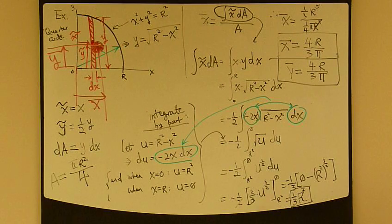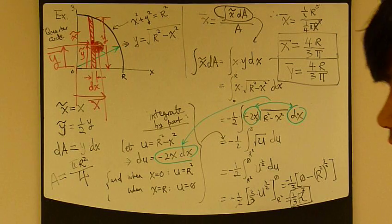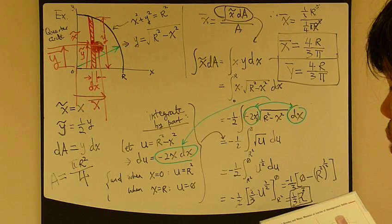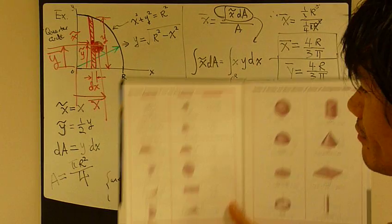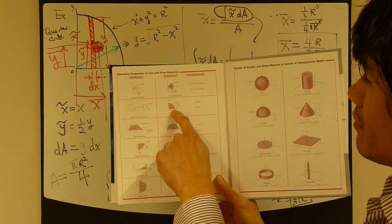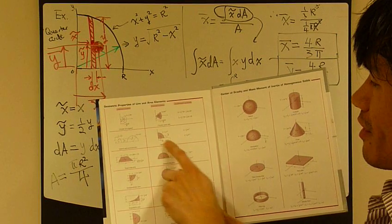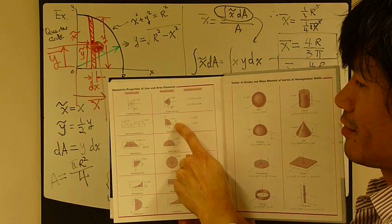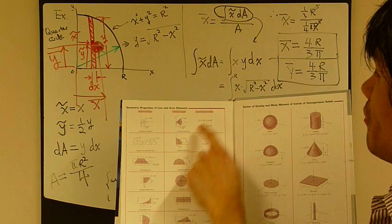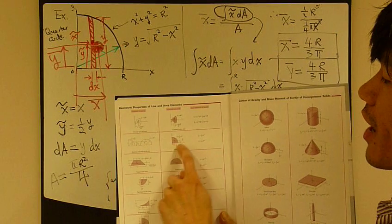Now if you look at the back of the book, this table that lists the x bar and y bar location of common shapes, okay, including the quarter circle that we just done. And if you look at this small print right here, exactly what we just found, 4r over 3 pi, all right?